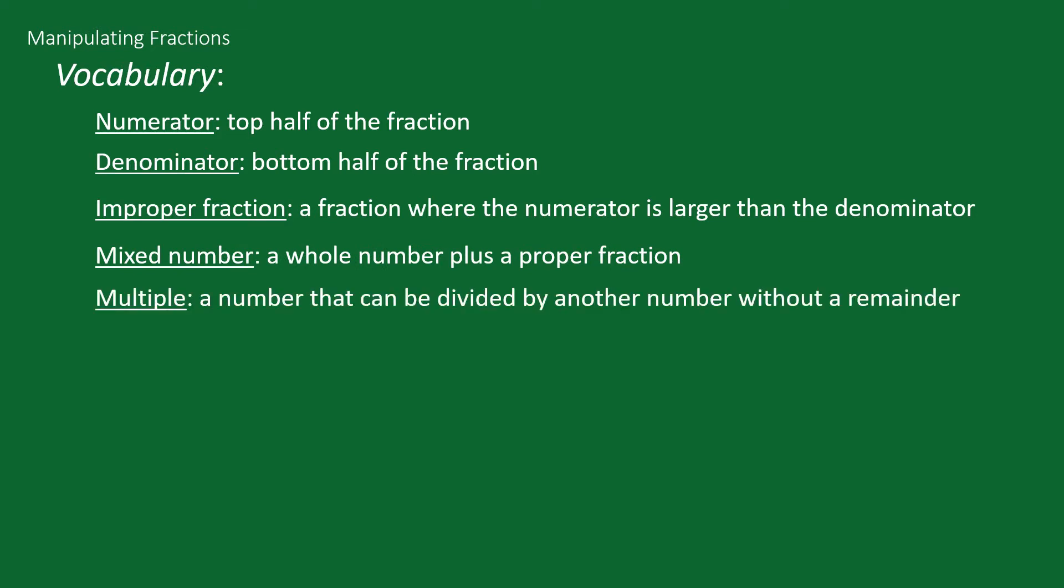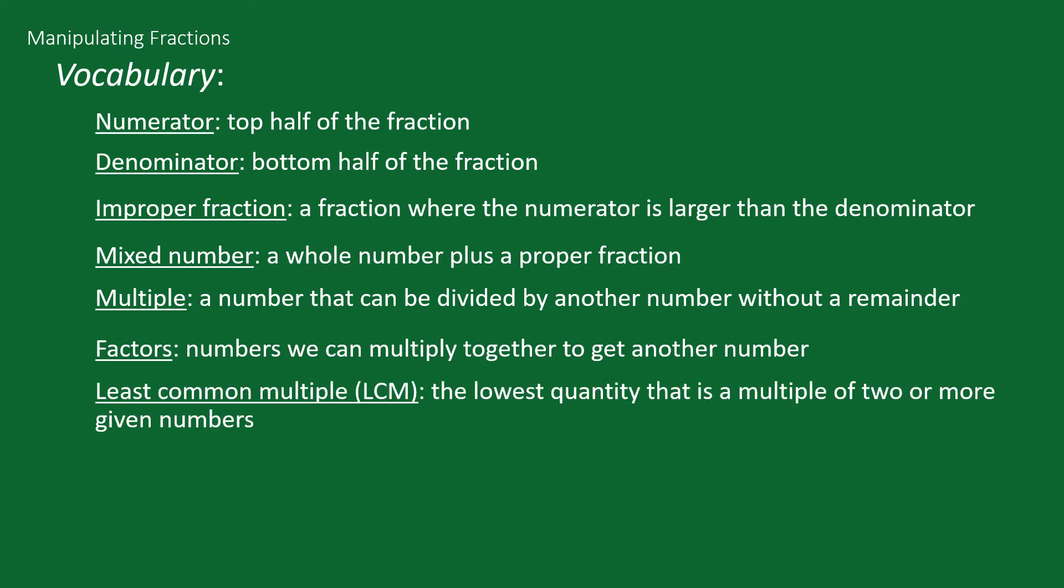A multiple is a number that can be divided by another number without a remainder. Factors are numbers we can multiply together to get another number. The least common multiple is the lowest quantity that is a multiple of two or more given numbers. The greatest common factor is the largest positive integer that divides each of the numbers.